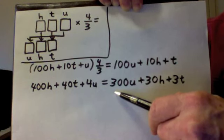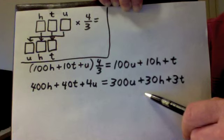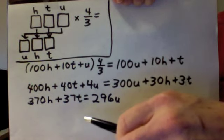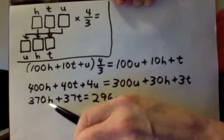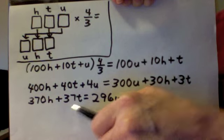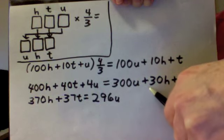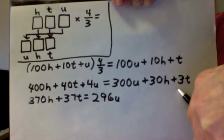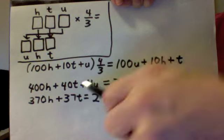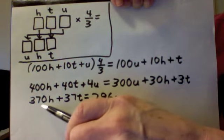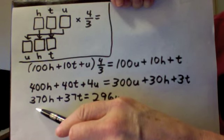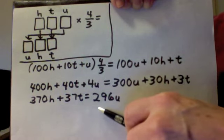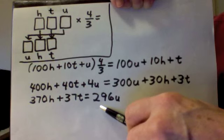There are more h's and more t's on the left side. There are more u's on the right side, so I get the h's and t's on the left and the u's on the right. By subtracting 30h from both sides, subtracting 3t from both sides, and subtracting 4u from both sides. My new equation is 370h plus 37t equals 296u.